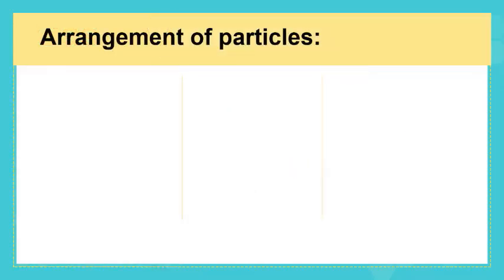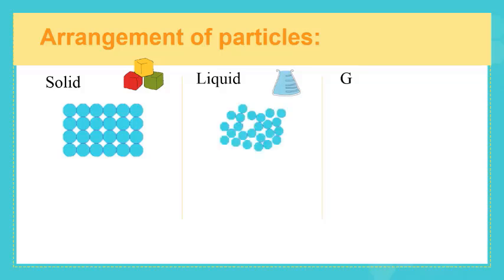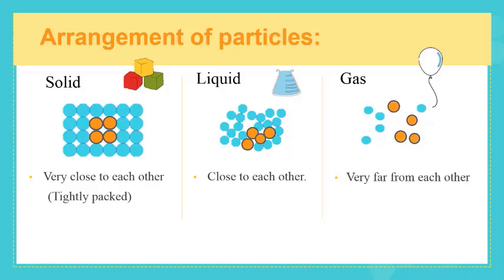Now let us sum up what we have discussed before, starting with the arrangement of particles in solid, liquid, and gas. The particles of a solid are very close to each other, tightly packed, while those of a liquid are close to each other, whereas the particles of gas are very far from each other.